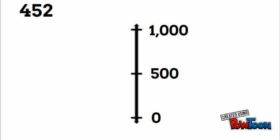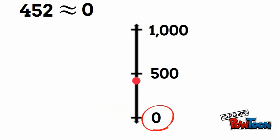We put a dot where four hundred fifty-two is — it's right below five hundred. So we're going to round down to zero. Four hundred fifty-two rounded to the nearest thousand is zero.